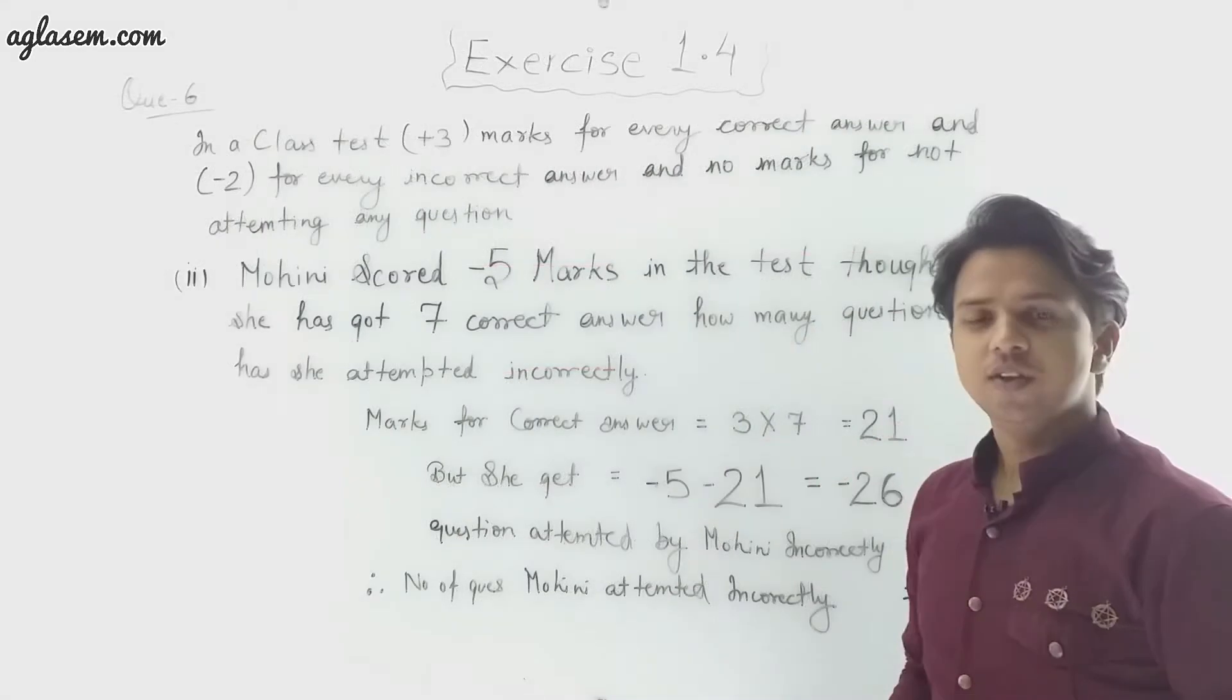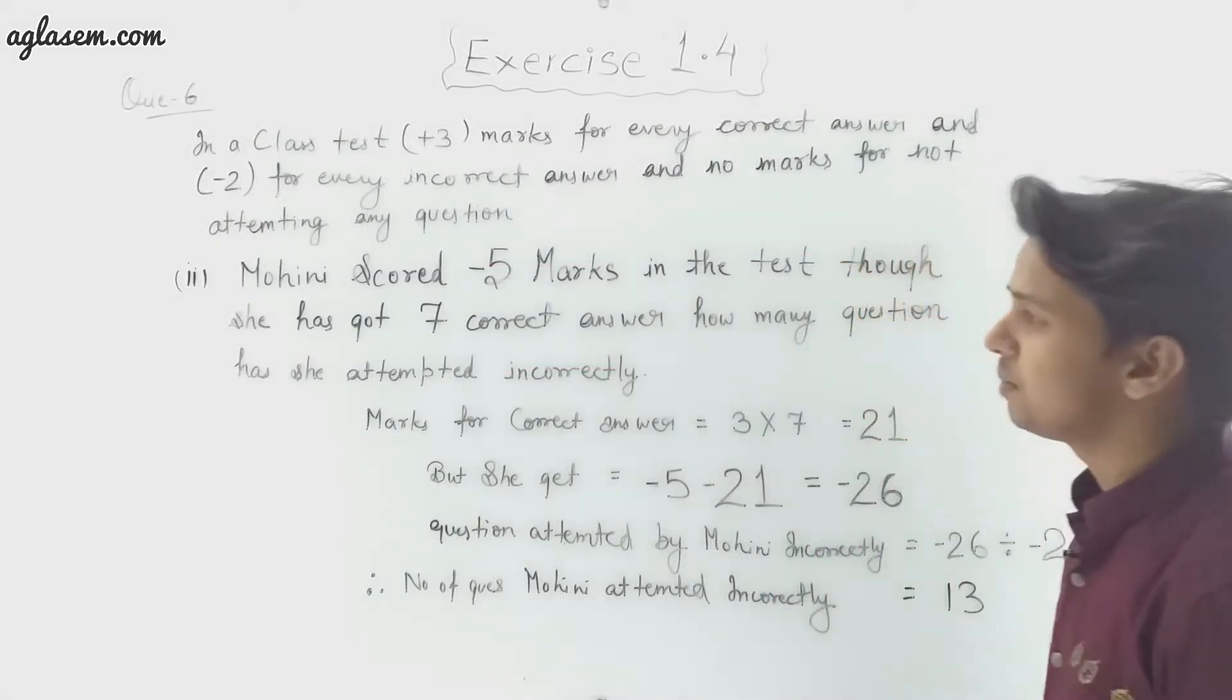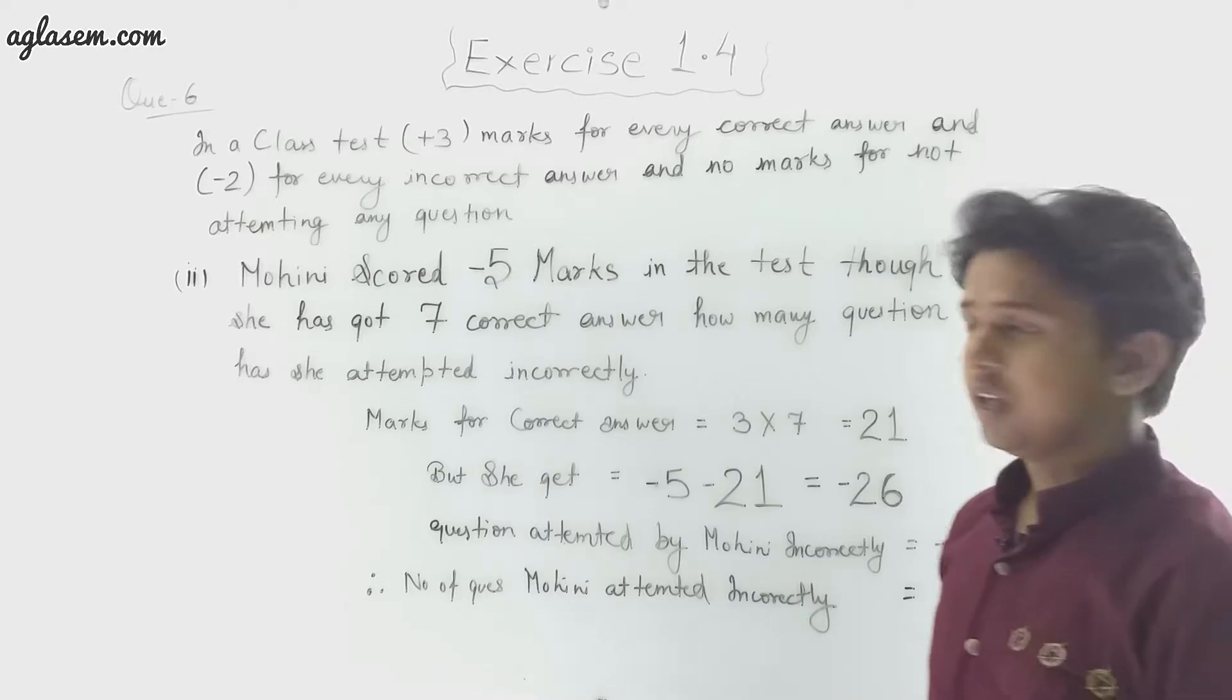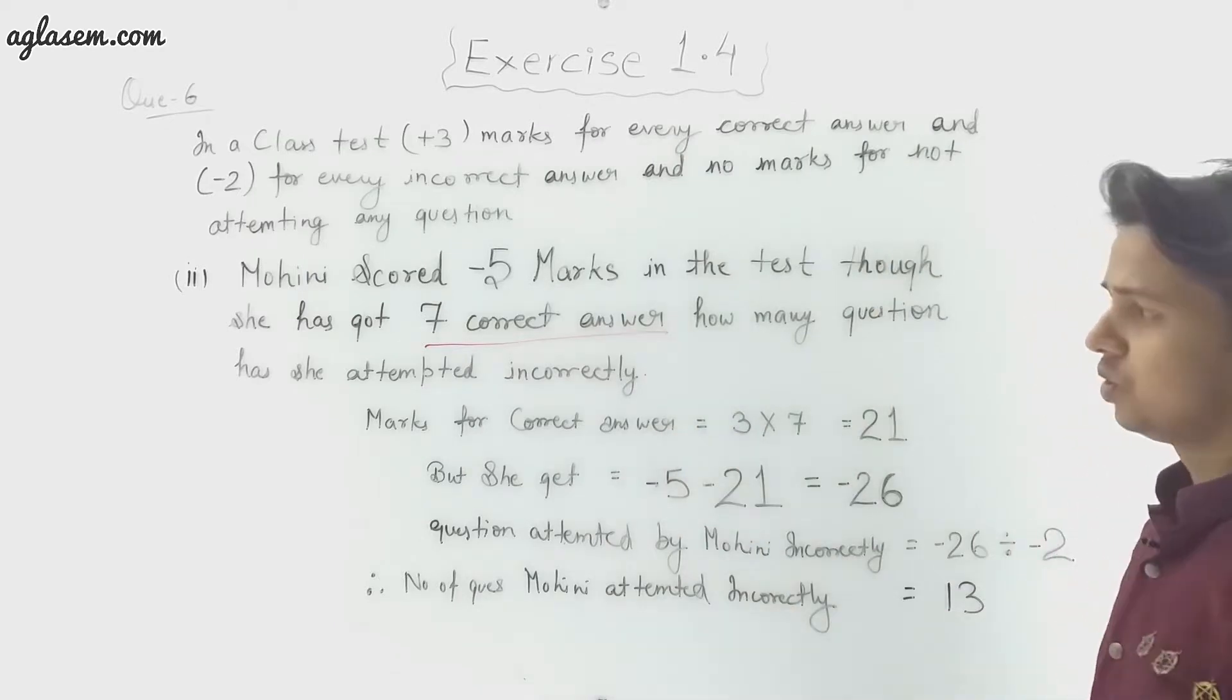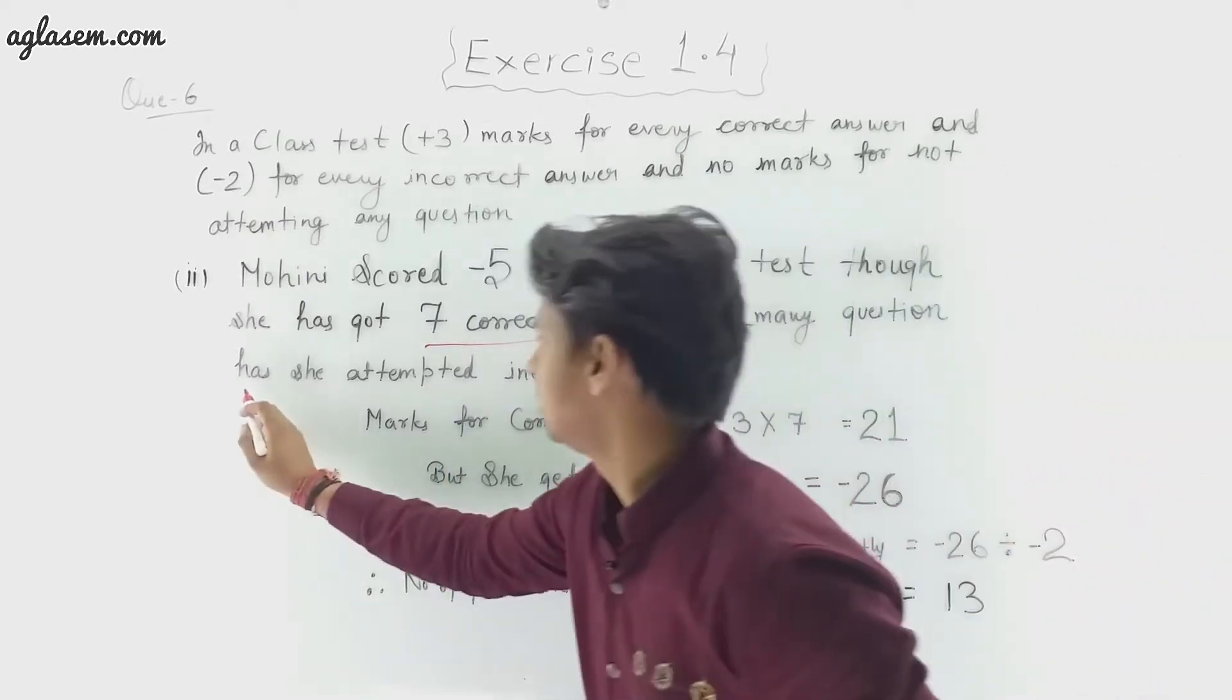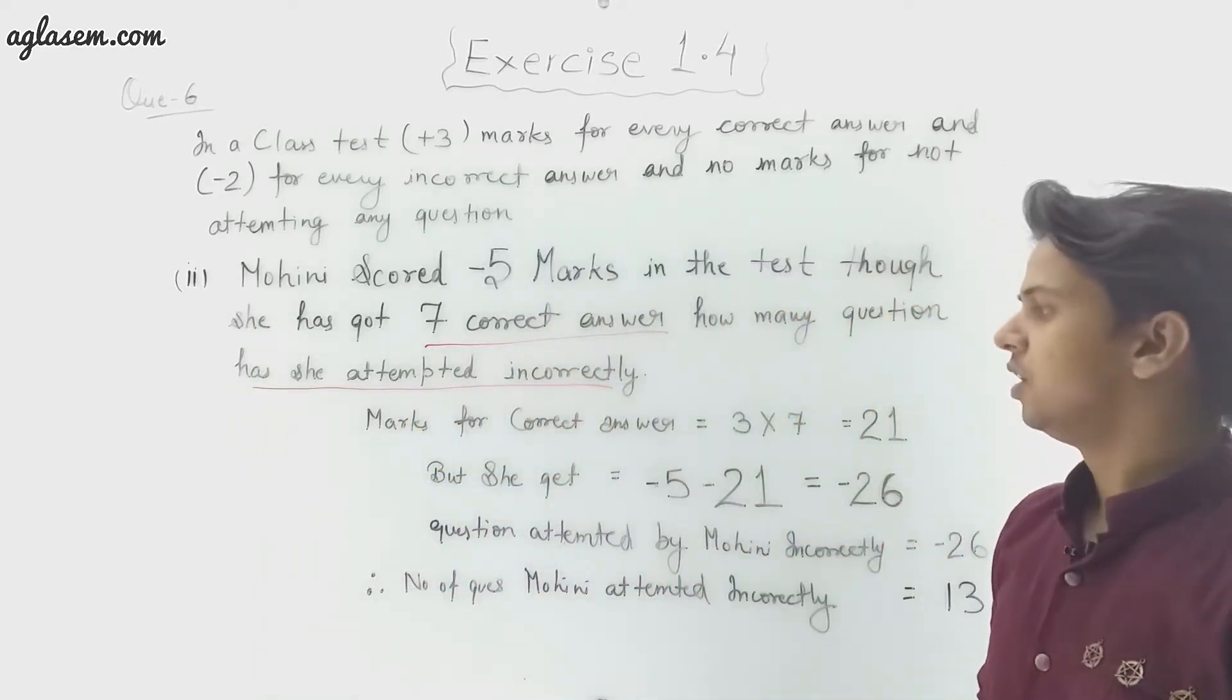So this was the solution for the first part. Let's come to the second part of the same question. The second part says Mohini scored -5 marks in the test, though she has got 7 correct answers. How many questions has she attempted incorrectly?